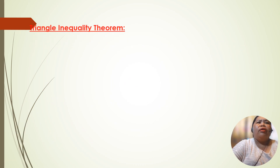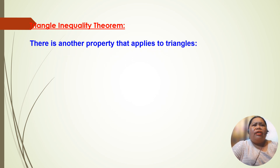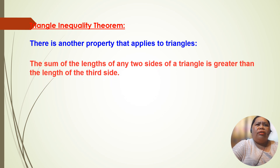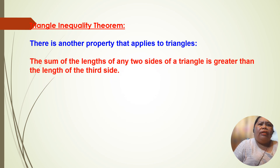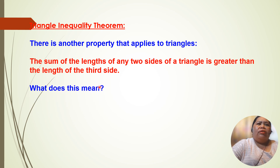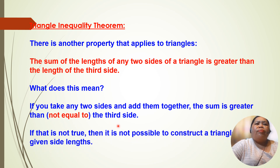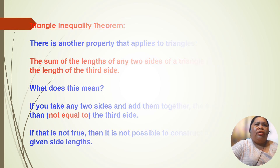So here we have the triangle inequality theorem again. There is another property that applies to triangles. The sum of the length of any two sides of a triangle is greater than the length of the third side. So what does it mean? If you take any two sides and add them together, the sum is greater than — not equal to — the third side. Now, if that is not true, then it is not possible to construct a triangle given those side lengths.